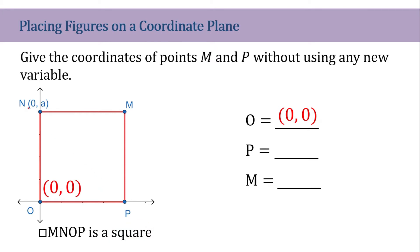If N has a coordinate of O, N, therefore we can simply assume that the measurement of ON is A. So the measurement of the other sides should be A as well. Given the coordinate points of O, which is (0, 0), the Y coordinate of P should be 0 as well, because they lie on the same Y axis.